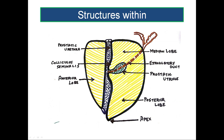The prostatic urethra enters the gland at the base as a continuation from the urinary bladder, entering at the junction of the anterior one-third and posterior two-thirds so that it lies more towards the anterior surface. The urethra descends through the gland and comes out to become continuous with the next part of the urethra called the membranous urethra.